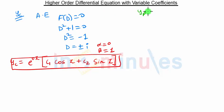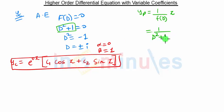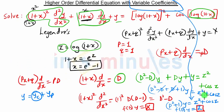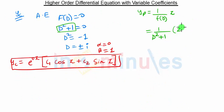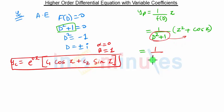Now we will find yp. The general equation of yp is 1/f(d) · z. Here f(d) = d² + 1 and z = z² + cos(z). Taking d² + 1 inside the bracket, we get 1/(d² + 1) · z² + 1/(d² + 1) · cos(z).